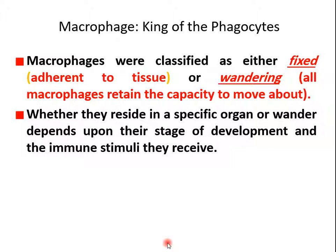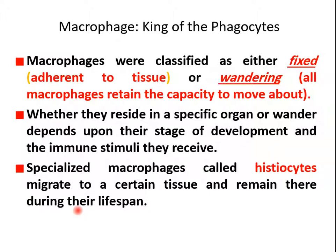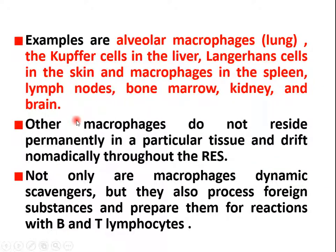This classification is based on whether macrophages remain in specific organs or move around depending on the stage or mediators they receive. The specialized macrophage is called a histiocyte — a cell that migrates to a certain tissue and remains there during its lifespan. Macrophage names change according to the site or tissue: in the lung they are called alveolar macrophages, Kupffer cells in the liver, Langerhans cells in the skin, and macrophages in spleen, lymph node, bone marrow, kidney, and brain.